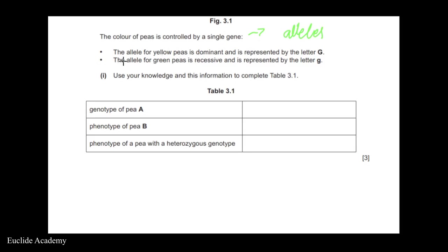The allele for yellow peas is dominant and is represented by the uppercase G. Alleles can come in two forms: dominant and recessive. The dominant allele will always show in the phenotype whether the organism is homozygous or heterozygous. The dominant allele is written as uppercase G and the recessive allele as lowercase g.